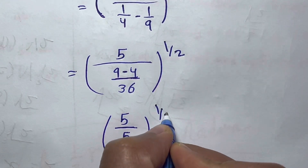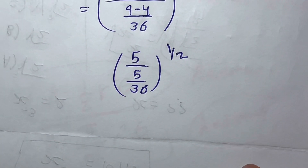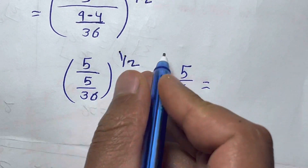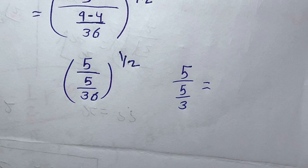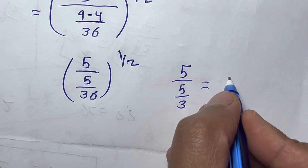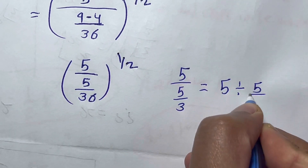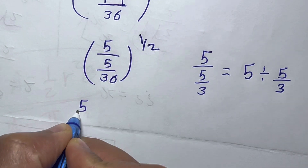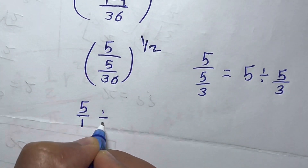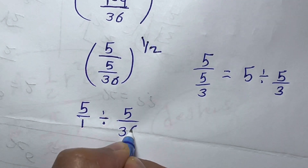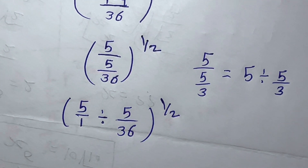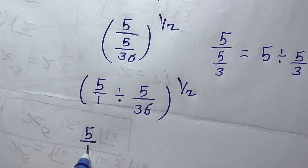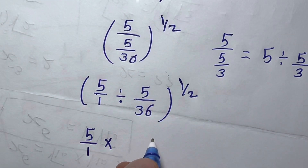This is what you may know as a complex fraction. We can rewrite five over five over 36 as five divided by five over 36. When you have division, you keep the first term, convert division to multiplication, and flip the second fraction.